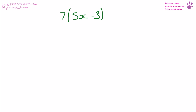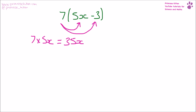When we're multiplying our brackets we have to make sure what is outside is times by each of the things inside. So we need to do seven times by 5x, which gives us 35x. Then we need to do seven times minus three, which gives us minus 21. So overall our answer is 35x minus 21.